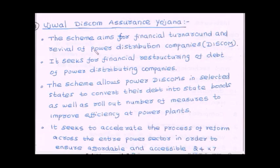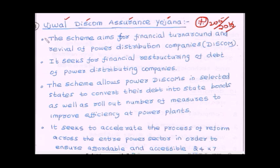The next topic is Ujwal Discom Assurance Yojana, a very important topic for Mains 2015 as well as the 2016 examination. Power distribution companies face huge losses due to various policy measures taken by state governments. Power distribution comes under state government control. These companies give free electricity to farmers in some states and face heavy transmission losses, resulting in a total debt of 3 to 4 lakh crore across the country.